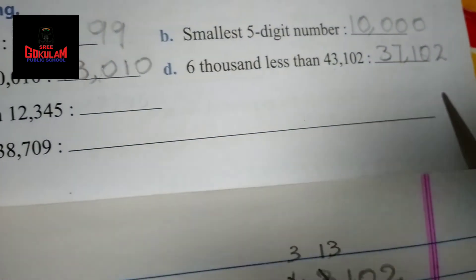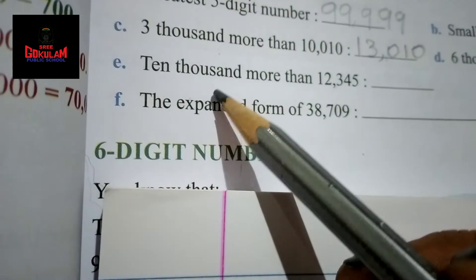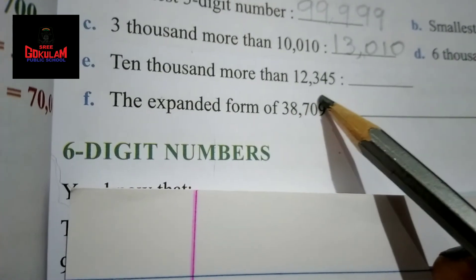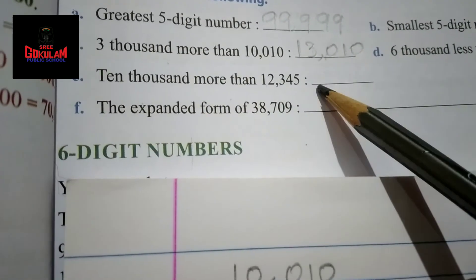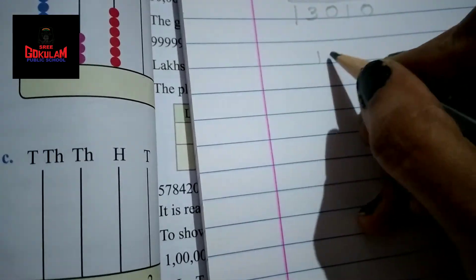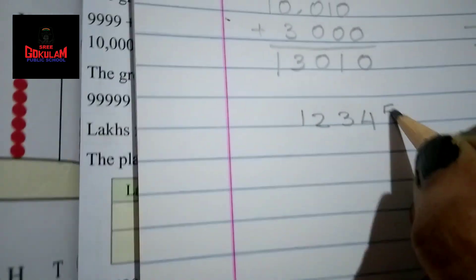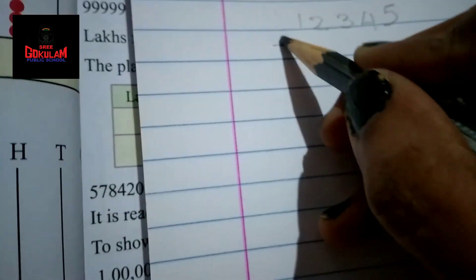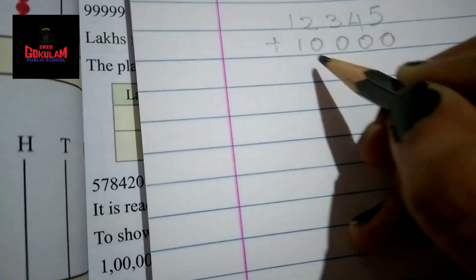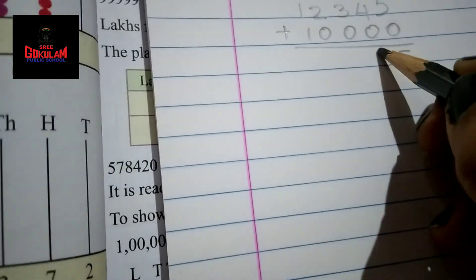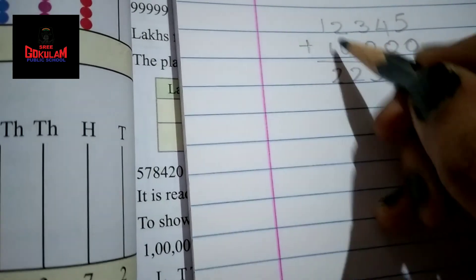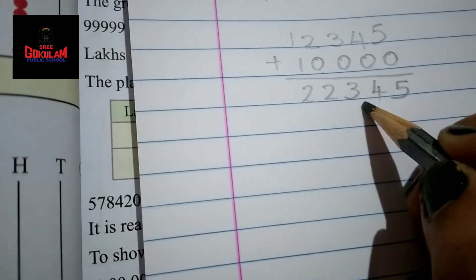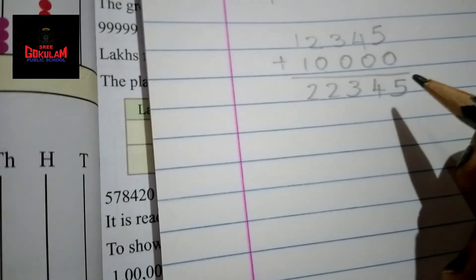And question number E is 10,000 more than 12,345. 10,000 more means we have to add 10,000 with 12,345. So, 12,345 plus 10,000. That is 5, 4 plus 0 is 4, 3 plus 0 is 3, 2 plus 0 is 2, 1 plus 1 is 2. That means 22,345.